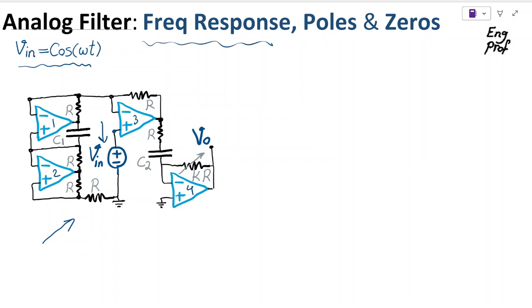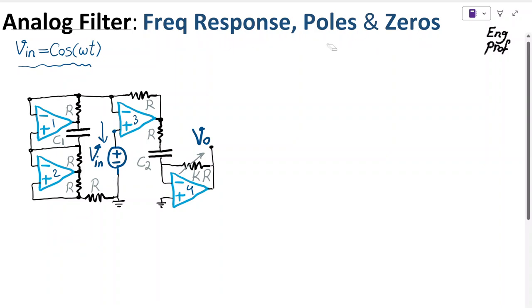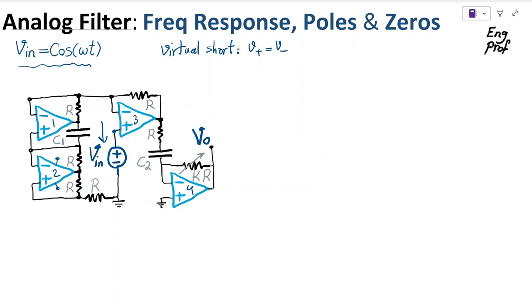We want to find the frequency response of this design and its poles and zeros. To do that, we make the assumption that op-amps are properly biased, so all positive and negative supply voltages are applied, negative feedback is dominant for all op-amps, therefore the circuit is in the linear region of operation, and we can assume virtual short is valid: V+ = V- for the input terminals of each op-amp.